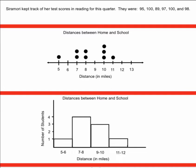For example, if I am given test scores that are listed right up here, in this case we have Siramori keeping track of her test scores in reading for this quarter. They were 95, 100, 89, 97, 100, and 98.